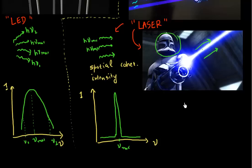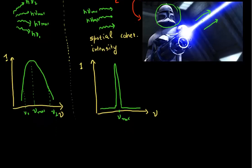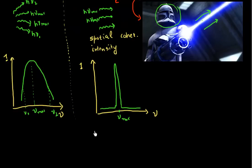Another way to convey this same idea is that we say the light which comes out from a laser has what we call temporal coherence. So this light has essentially temporal coherence. So why is this the case? What is making the light from an LED different from the light from a laser?